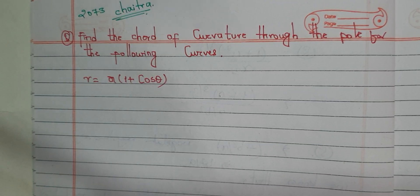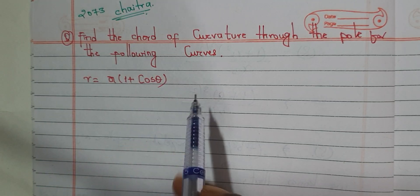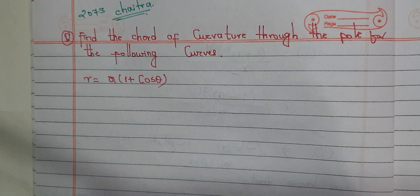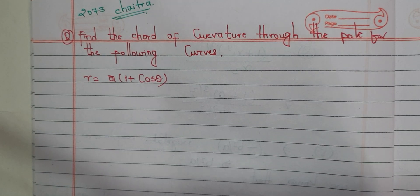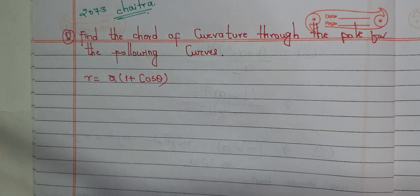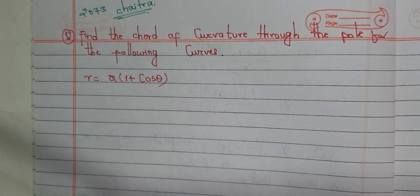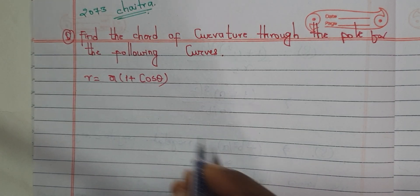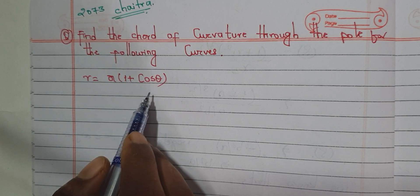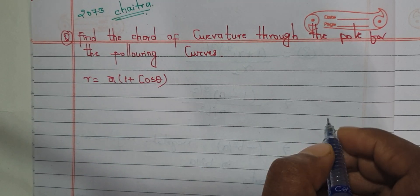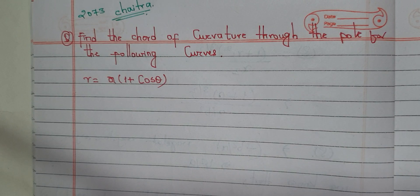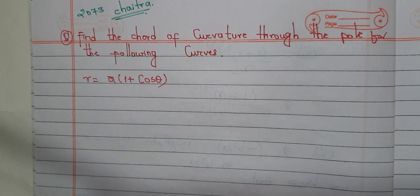Welcome back to the Engineering Lectures. We are talking about the Code of Curvature. This is question 73 in the category. This question is a different type of Code of Curvature problem, where we have the origin, xy coordinates, and polar coordinates rs. We will work with the curve r = a(1 + cos θ).